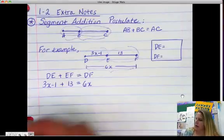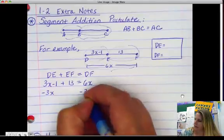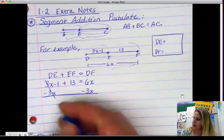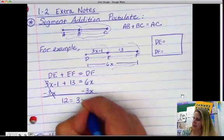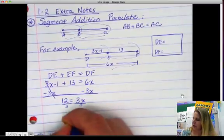So I'm going to subtract 3x here and here. And at the same time, I'm going to combine these two terms. So we have 12 equals 3x, divide by 3, and I get 4 equals x.